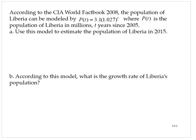According to the CIA World Fact Book 2008, the population of Liberia can be modeled by P of t equals 3.1 times 1.027 to the t, where P of t is the population of Liberia in millions, and t is years since 2005.